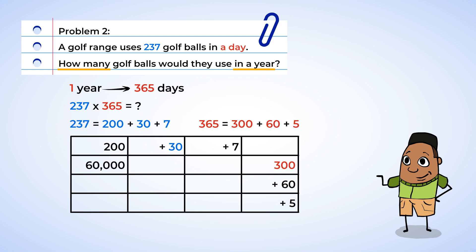30 times 300. Well, 3 times 3 is 9. With 3 total zeros, we get 9,000. And 7 times 300. 3 times 7 is 21, but with the 2 zeros, that's 2,100. Moving on to the next row.